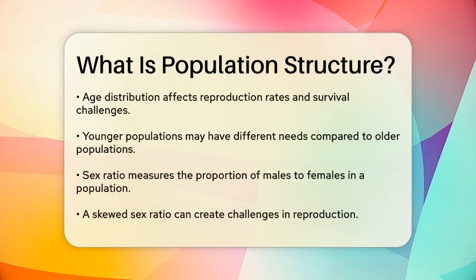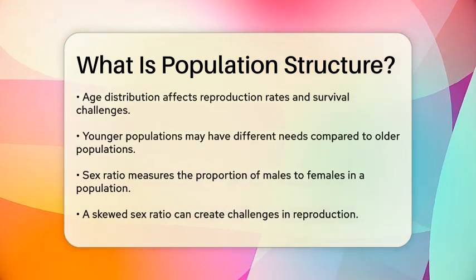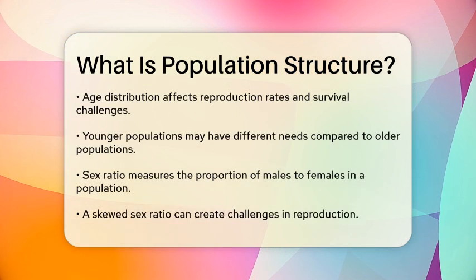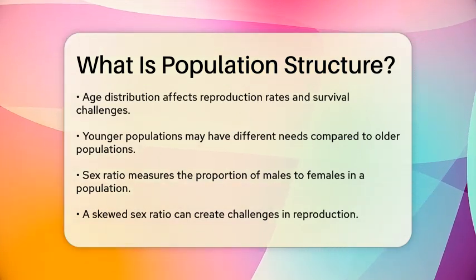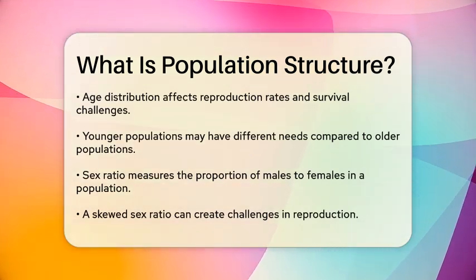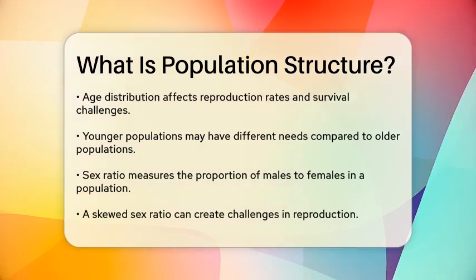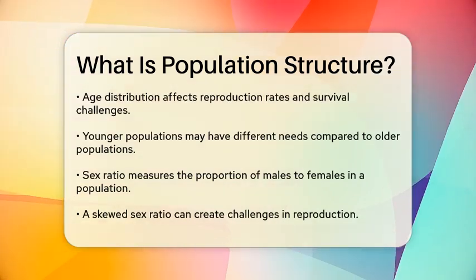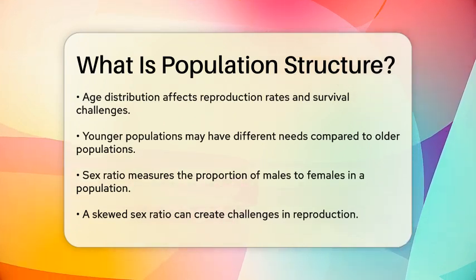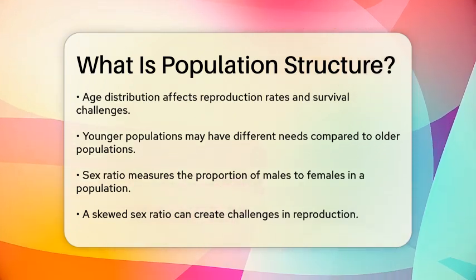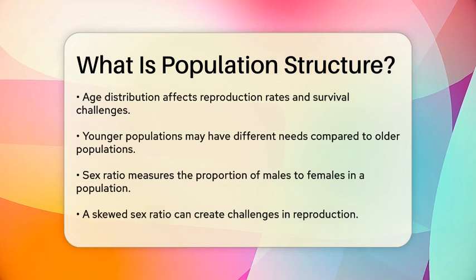In ecological terms, population structure can be analyzed through age distribution, which shows how many individuals fall into different age categories. This distribution can affect reproduction rates and survival, as younger populations may have different needs and challenges compared to older ones.